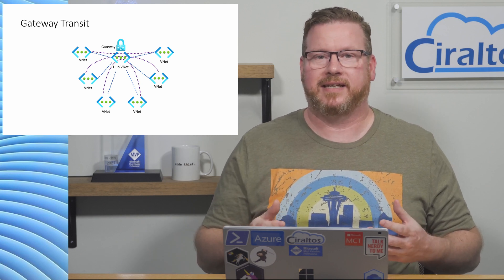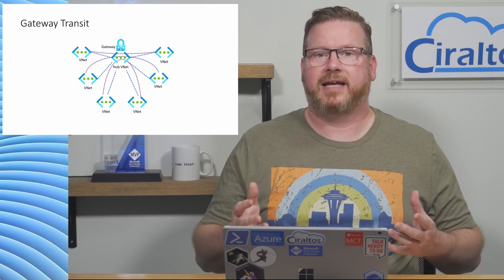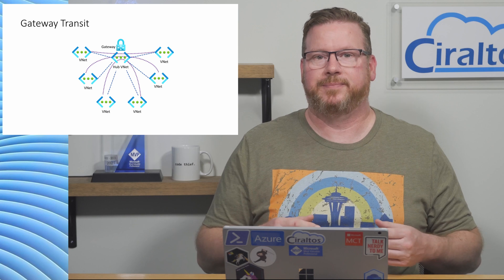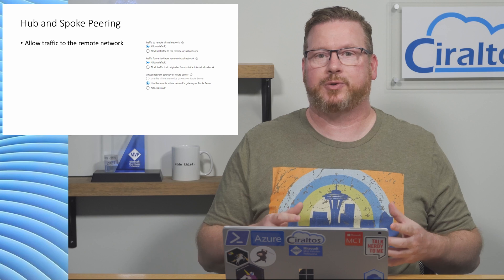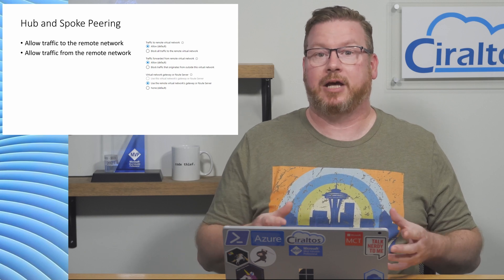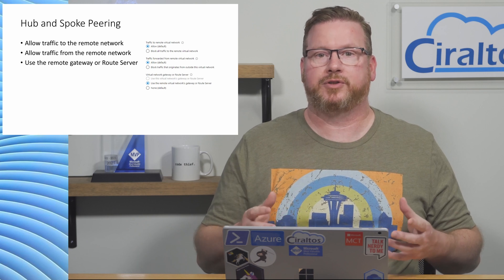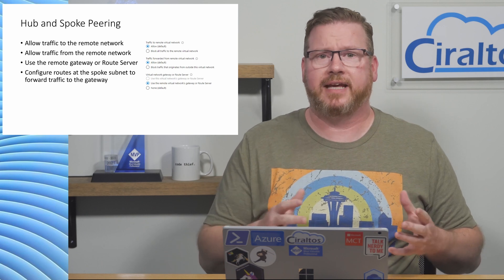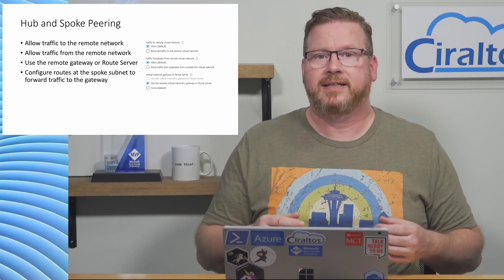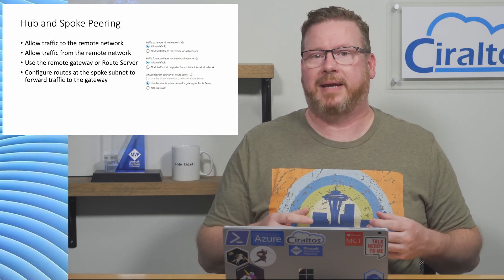I'm not actually creating a site-to-site VPN — that's not the point of this video. For this to work, the peering relationship between the spoke and the hub must allow traffic to and from the remote network. It also has to be configured to use the remote virtual network gateway, and we need to configure routing at the spoke subnet so traffic to the other spokes forwards to the gateway. This makes the solution a bit more difficult to implement because we have to manually define routes for each subnet.